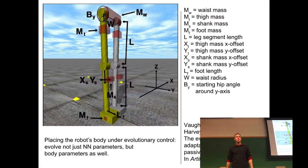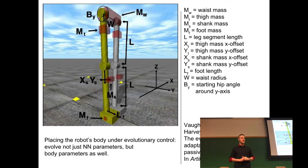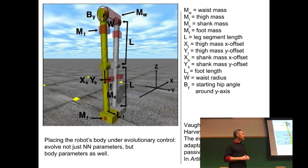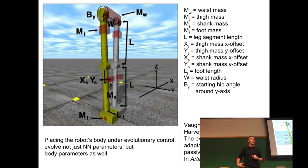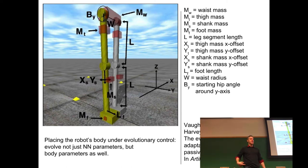One important morphological parameter is the starting hip angle around the y-axis: how much is the swing leg rotated forward of the stance leg when each robot is placed at the top of the declined plane. Because one leg is rotated forward, gravity will pull the robot forward and it will start to move down the decline.